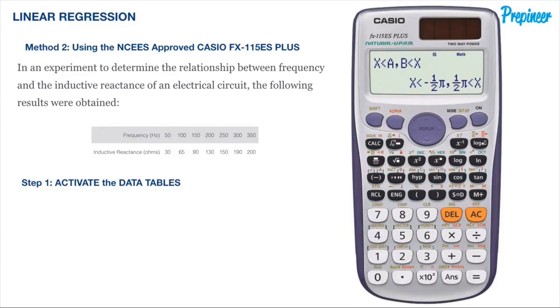The first step is to activate the data tables so we can store the data given in this problem statement. To do this, first hit the mode button to come to a screen that looks similar to this. Once on this screen, press 3 to select option 3 for statistics. You'll be brought to a screen where you will press 2 to select option 2 for a plus bx.